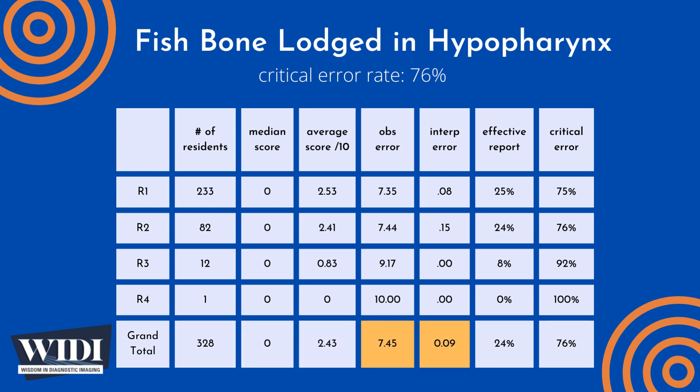The average number of points lost out of 10 due to observational discipline was 7.45, while only 0.09 points were lost due to interpretive errors. We defined an effective report to be one which achieves scores between 7 and 10 — in terms of letter grades, an A or a B. In this most missed case, 76% of residents produced effective reports.